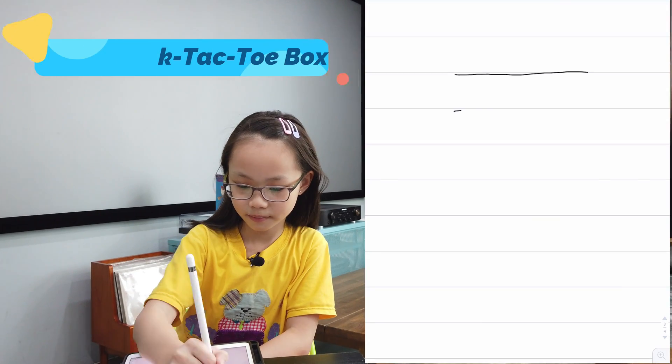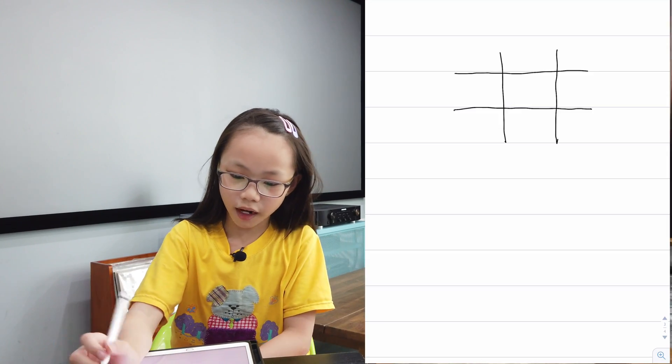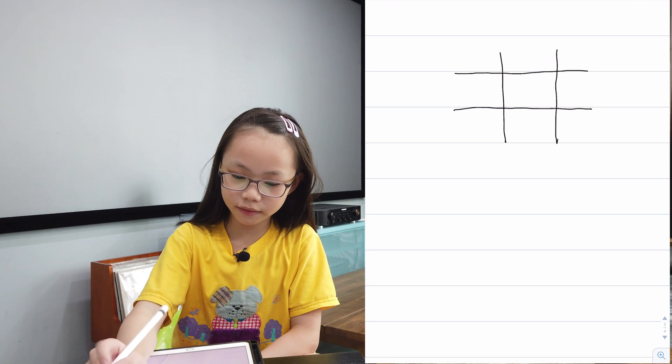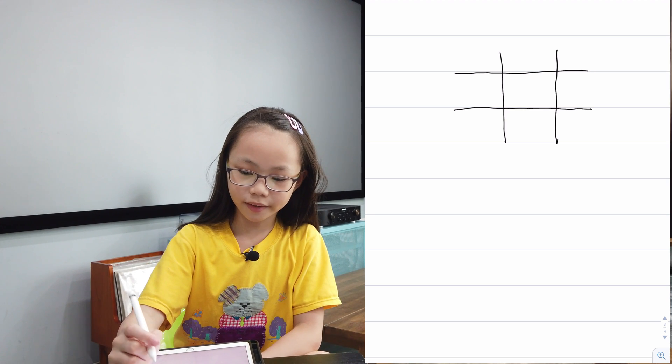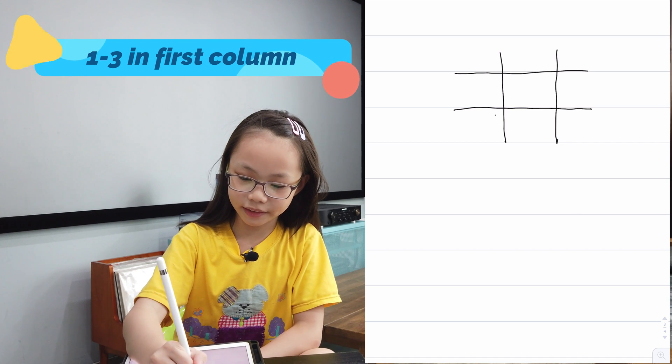First we need to draw a tic-tac-toe board like this. Now we need to draw the numbers 1 through 9, and we're going to write the numbers 1, 2, 3 on the first column like this.